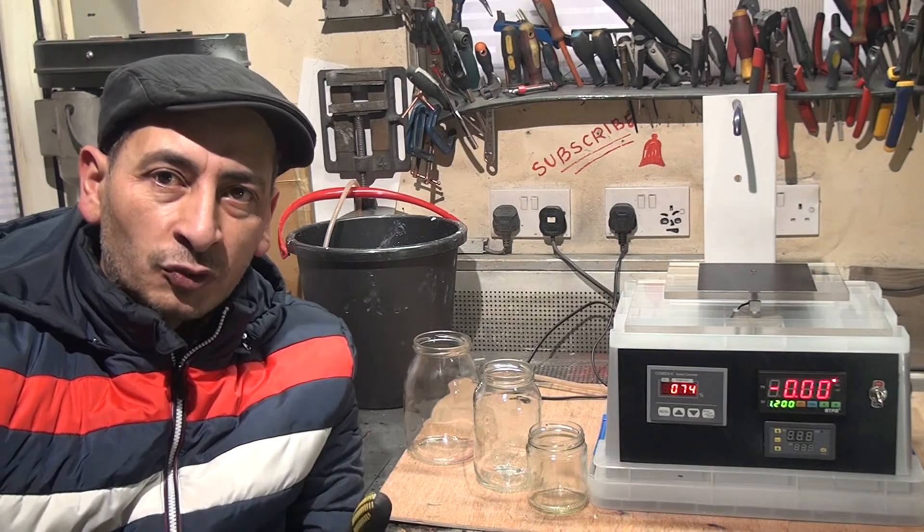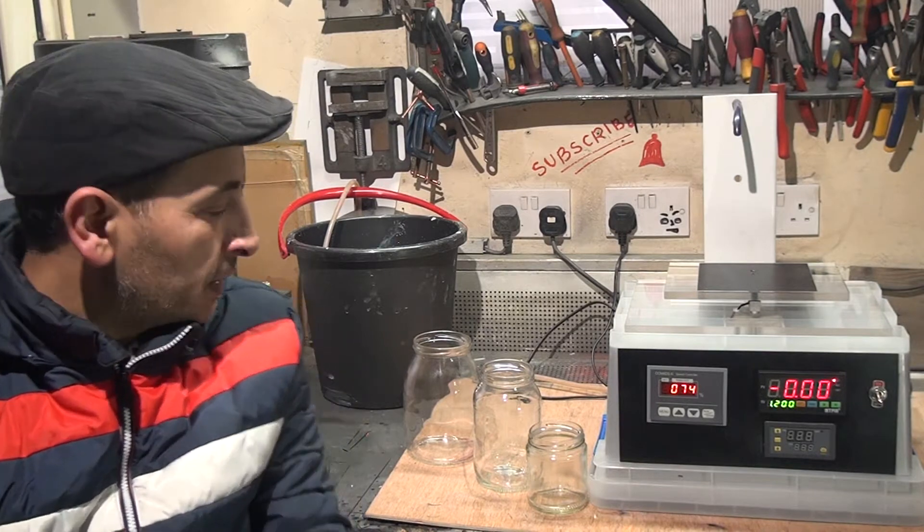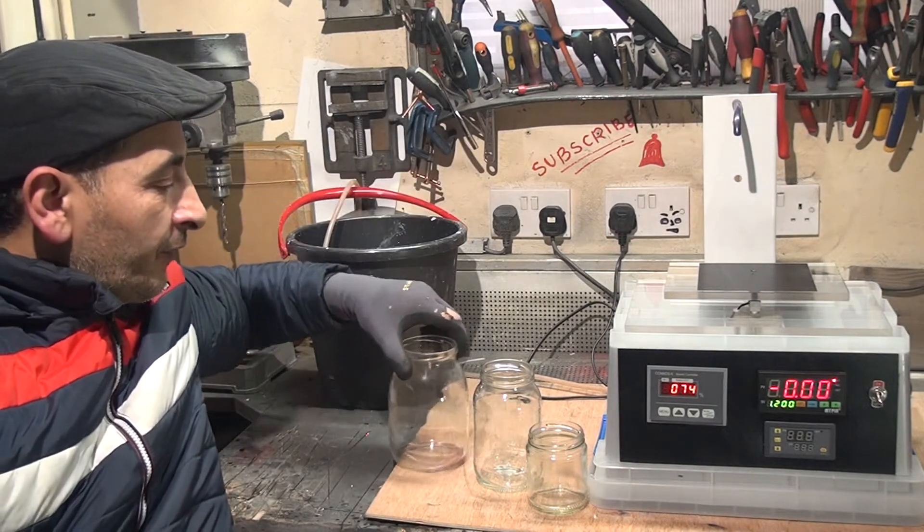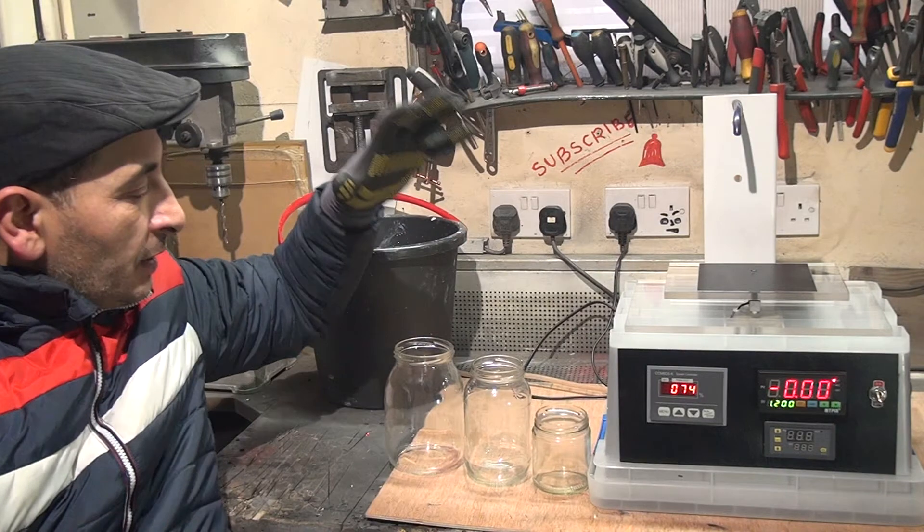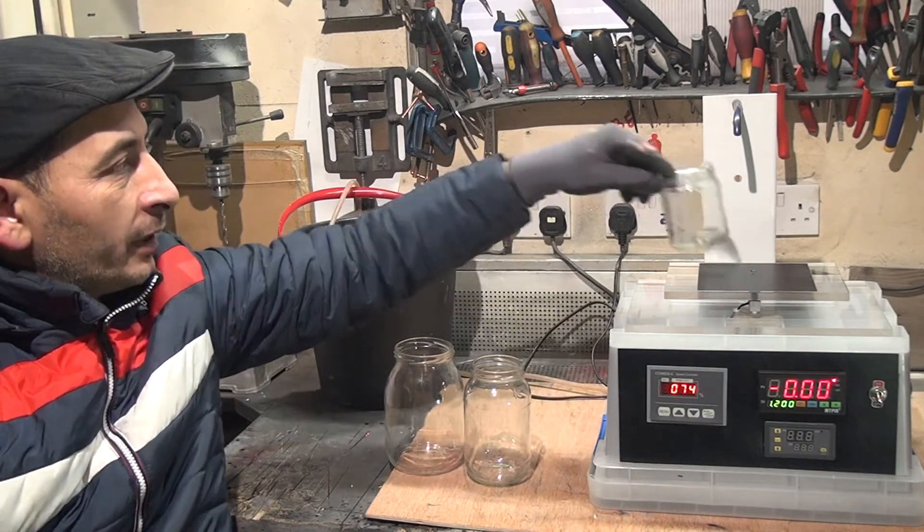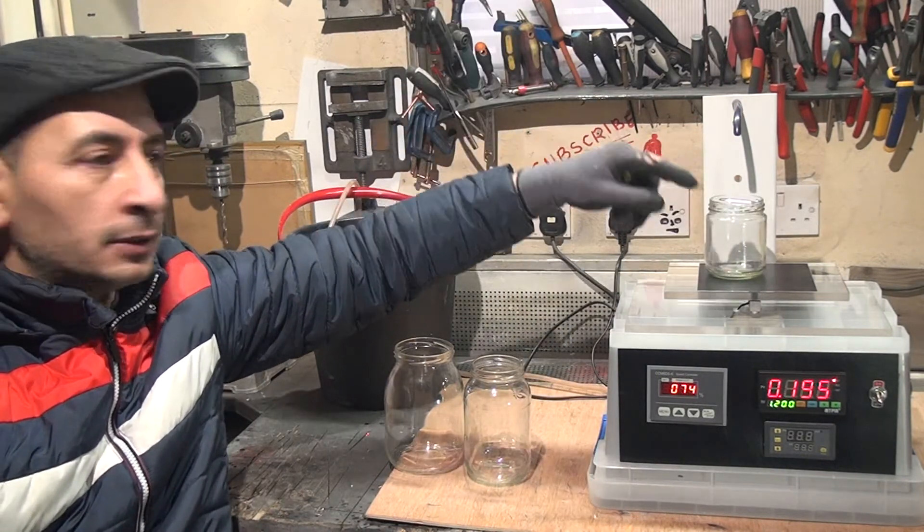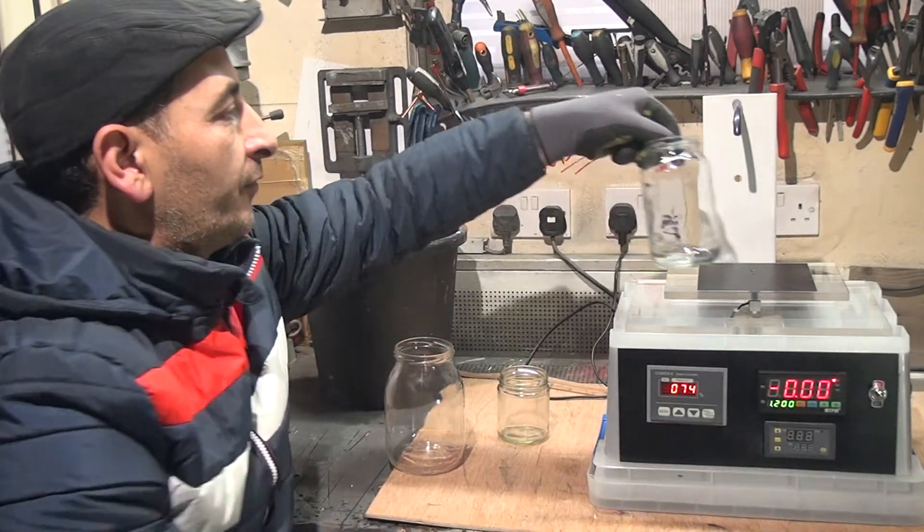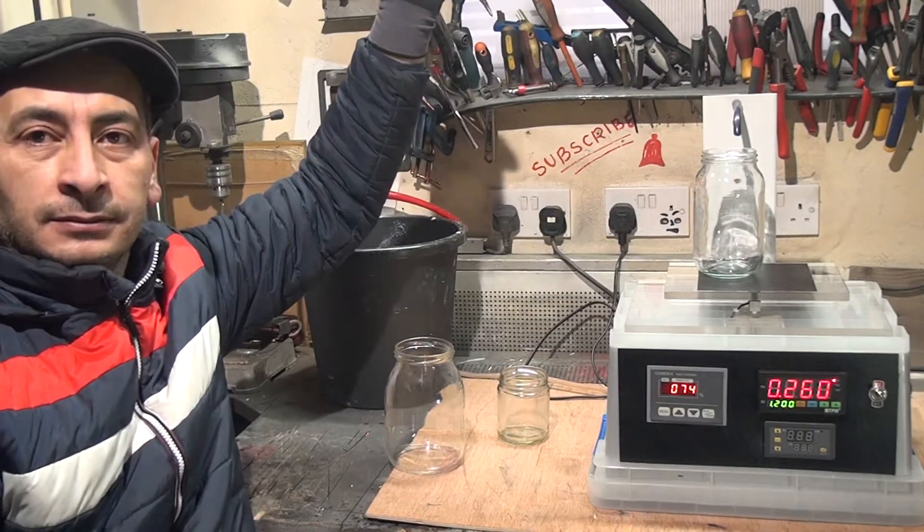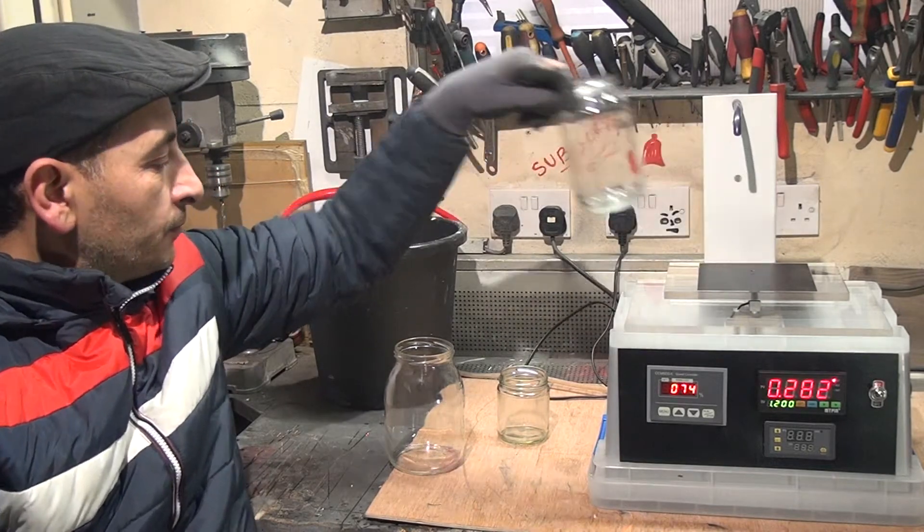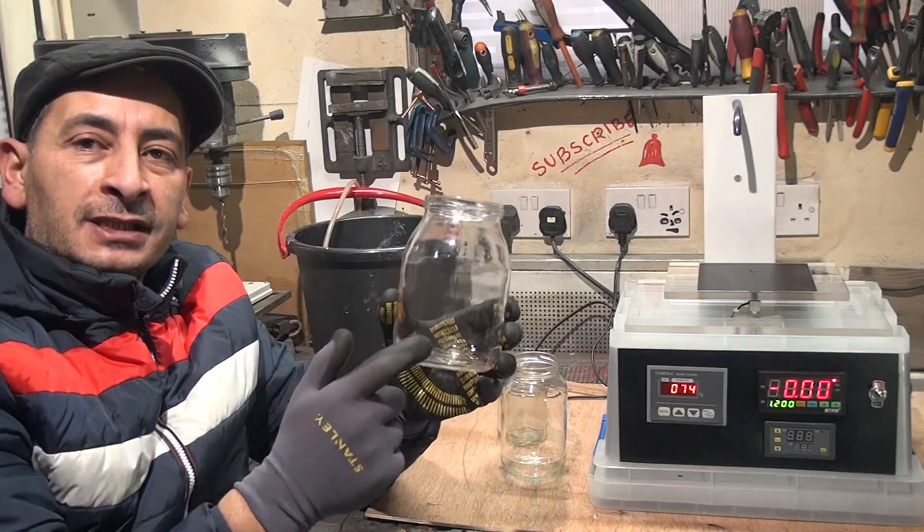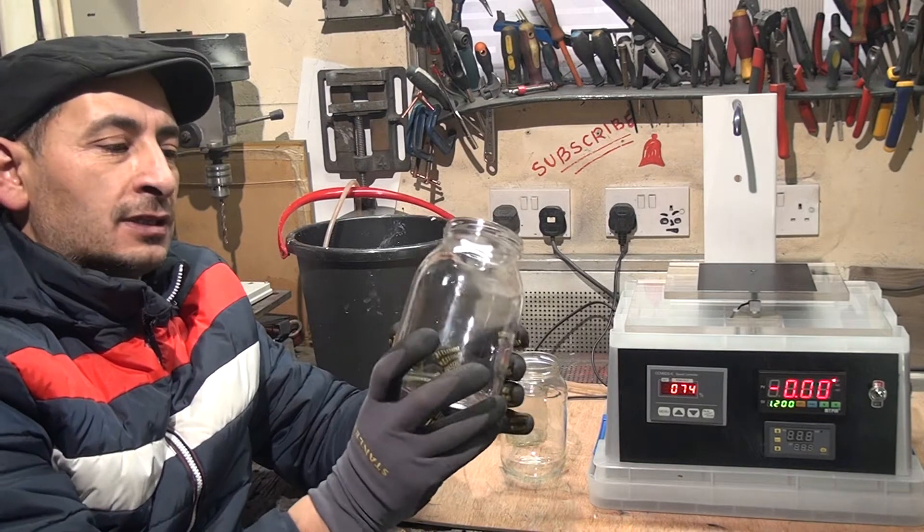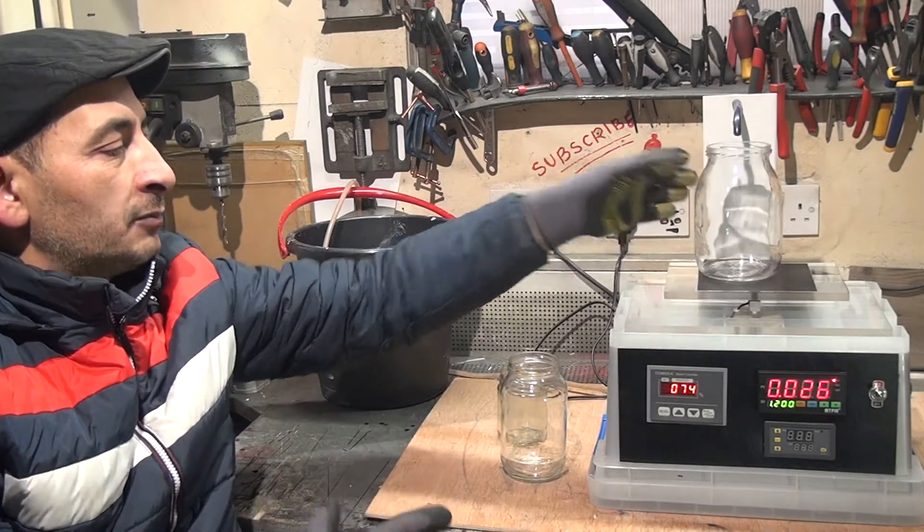In here I have three different jars, different sizes. For example, if I put the small one in here, it would not work. If I put the other size, it will not work. It's gonna work only in this jar because I set up my machine to this jar. So let me put it.